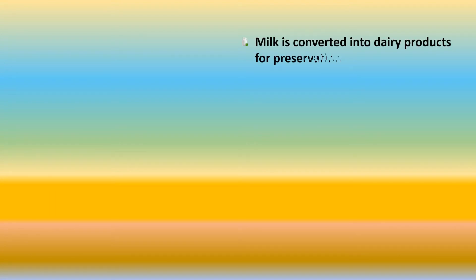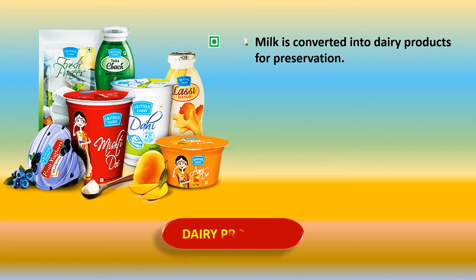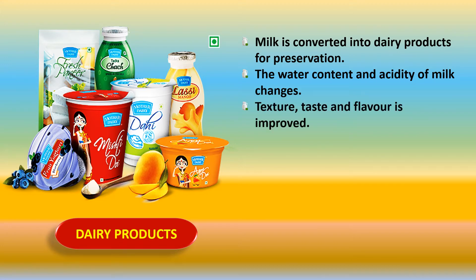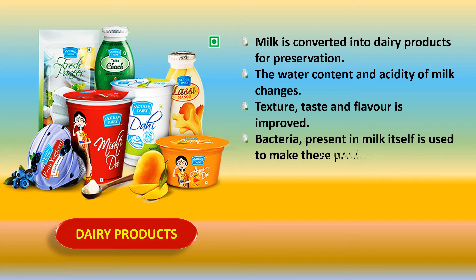Milk has a very low shelf life — it does not last for very long — and therefore it is converted into dairy products for preservation. The water content and acidity of milk changes when we change it from milk to yogurt, cheese, or some other dairy product. The texture — the feel — is different: yogurt has a different feel, cheese has a different texture, so does butter. The texture, taste, and flavor is improved when we change it from milk to dairy product. The bacteria present in milk itself is used to make these products.